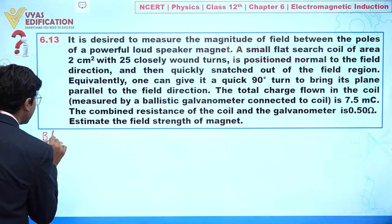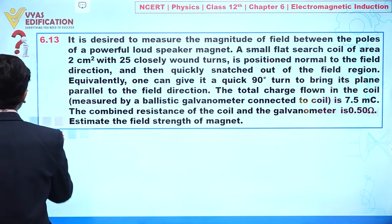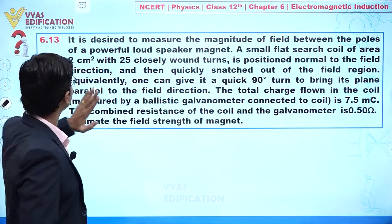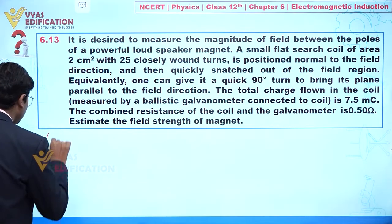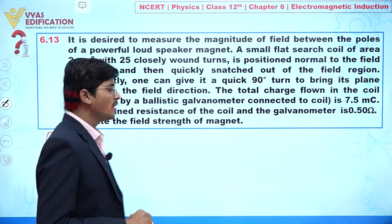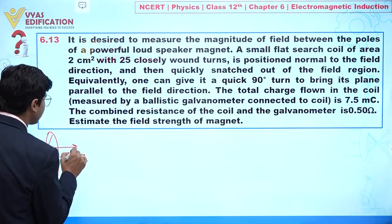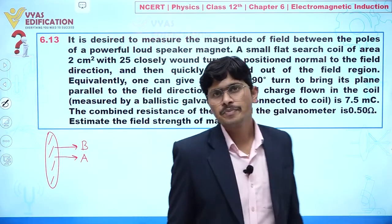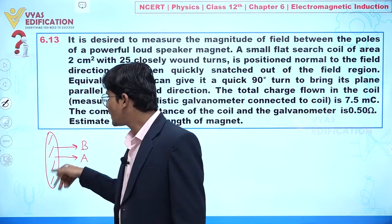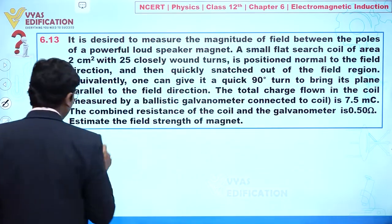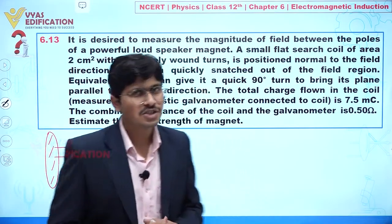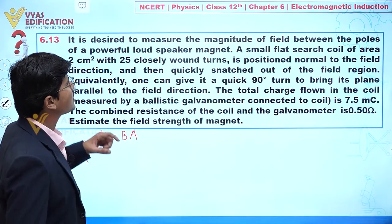A small flat search coil of area is positioned normal to the field. So this is a coil — we can say this is the direction of the area vector. The plane of the coil is perpendicular to the magnetic field, which means the area vector is in the direction of the magnetic field. So initially, φ₁ = BA, because the angle between B and A is 0.